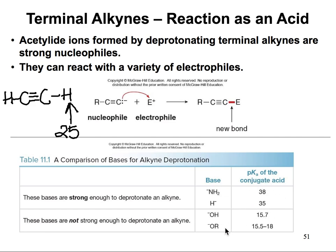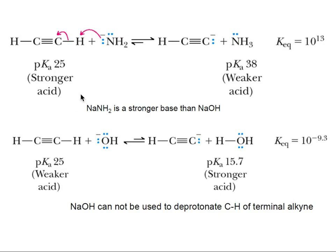If we have bases like OH- or OR-, their conjugate acids have a pKa below 25, so those are not going to be strong enough to deprotonate the hydrogen at the end of the terminal alkyne.